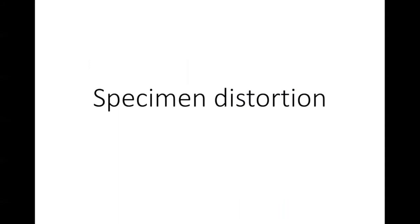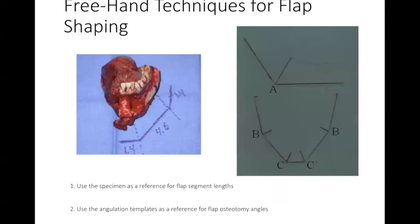The first example is specimen distortion. When we shape the fibula flap with freehand techniques, we require two elements: the surgical specimen as a reference for flap segment lengths, and angulation templates as a reference for fibula flap osteotomy angles. If anyone is interested in learning how to shape the fibula flap, I encourage you to look at a paper I wrote with Dr. Santamaria and Dr. Cordero back in 2013.